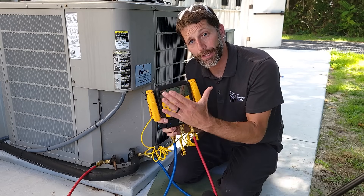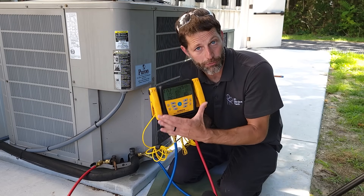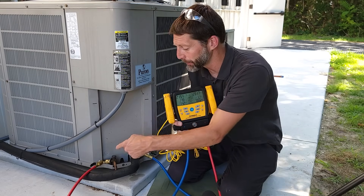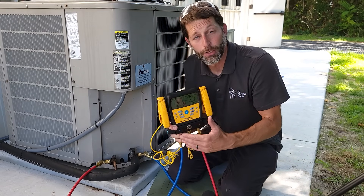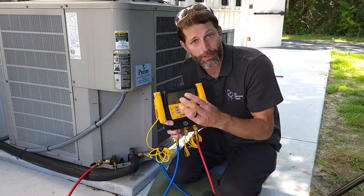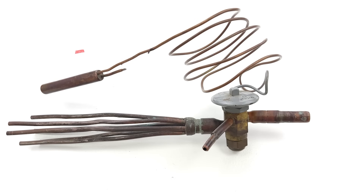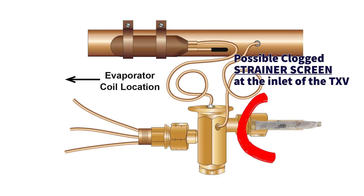We're also going to compare that against a liquid line restriction problem — that's a blockage in the liquid line. Maybe the TXV is bad and closed down, or the bulb has lost its refrigerant charge, which is the indoor metering device. You could also have a clogged strainer screen before the metering device, or a clogged filter dryer.